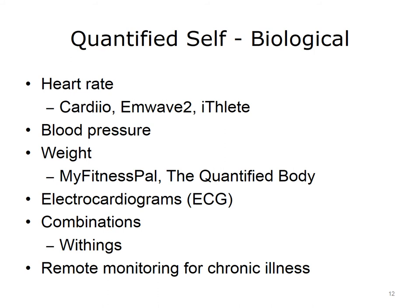Biological tracking can involve any physiological output, as long as there are sensors on devices that can capture the relevant data. Data can be captured with components available on smartphones, as part of independent sensors, or as unique combinations of both. Some common biological tracking apps collect data on heart rate, blood pressure, and weight. Cardio uses a smartphone's camera to detect heart rate. With each heartbeat, more blood is pumped into our faces, which changes how much light is absorbed and reflected back to the camera. These subtle changes are detected by the app and converted to an accurate heart rate.